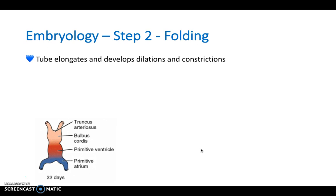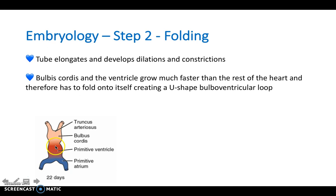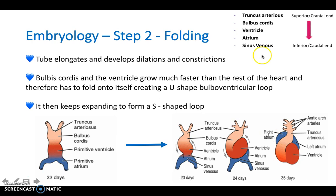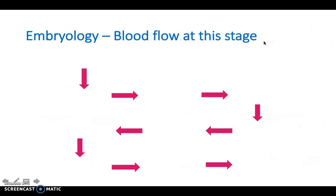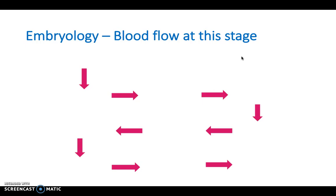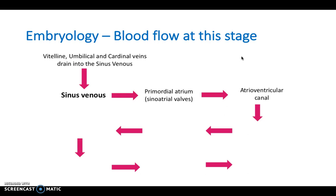Step two is folding. The endocardial tube elongates and develops into dilatations and constrictions, meaning some parts are thicker than others. The bulbus cordis and the ventricle grow much faster than the rest of the heart and as a result have to fold in on themselves to cause a U shape, and then continue to fold to form an S shape. Blood flows through the vitelline, umbilical, and cardinal veins into the sinus venosus, then to the primordial atrium, the AV canal, the primordial ventricle, the bulbus cordis, truncus arteriosus, aortic sac, aortic arches, and then out to the embryo.